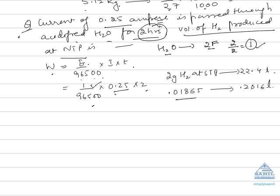This equals 0.01865 grams. Since 2 grams of hydrogen at STP produces 22.4 liters (one mole of any gas at STP), 0.01865 grams gives 0.2016 liters, which is our answer.